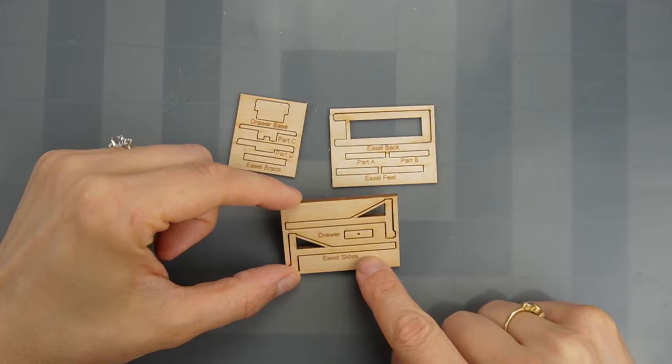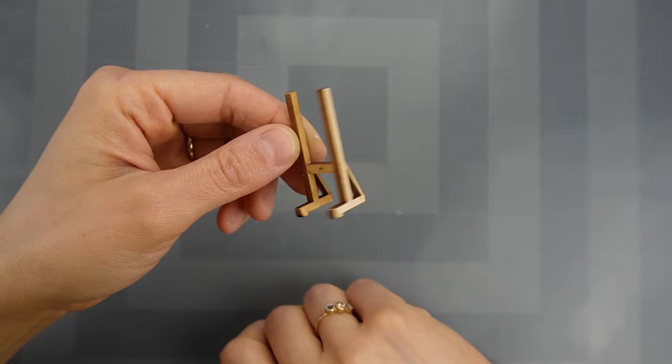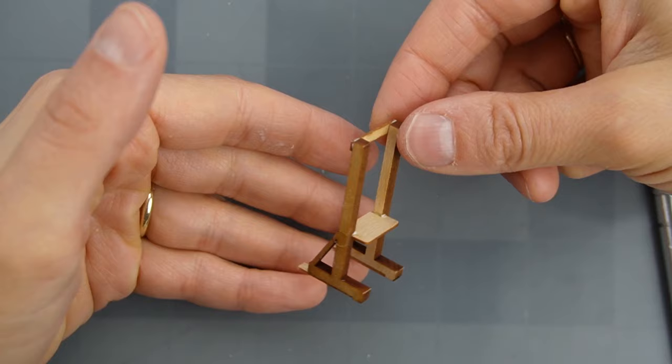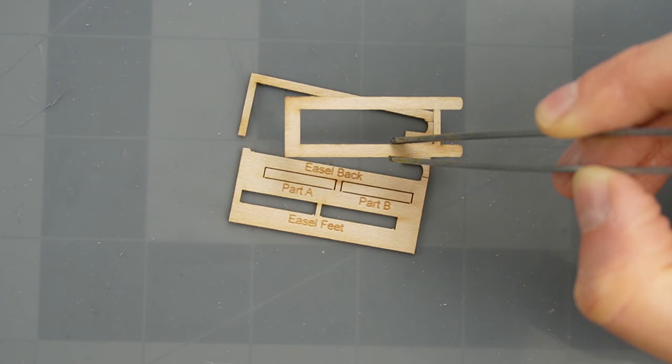When it came time to assemble the artist easel, things went a little bit sideways because I glued the wrong piece in between the two sides. I did ultimately discover the mistake and rectify it.